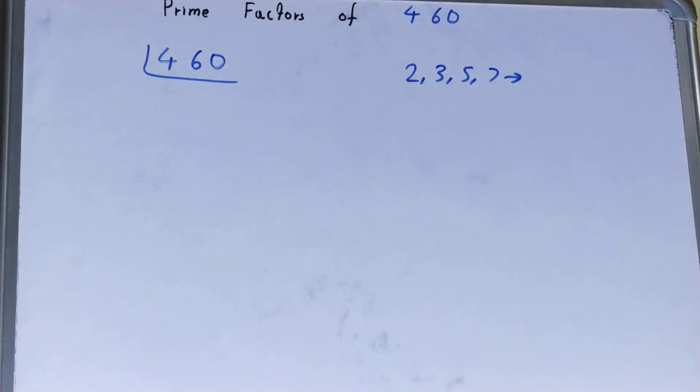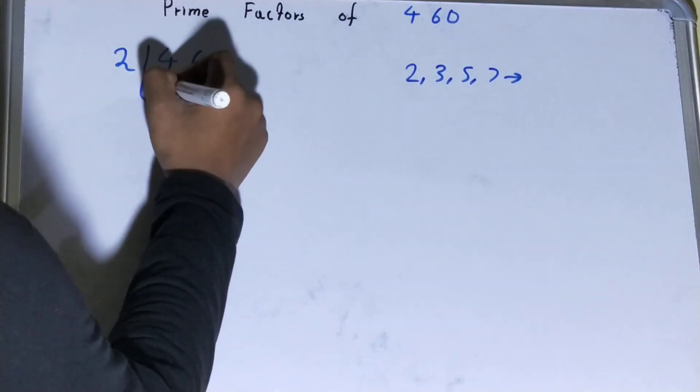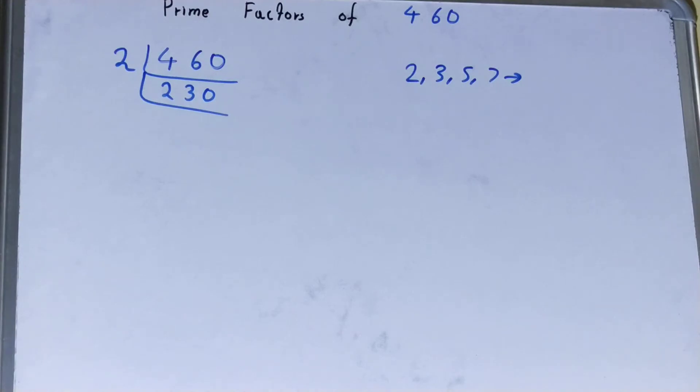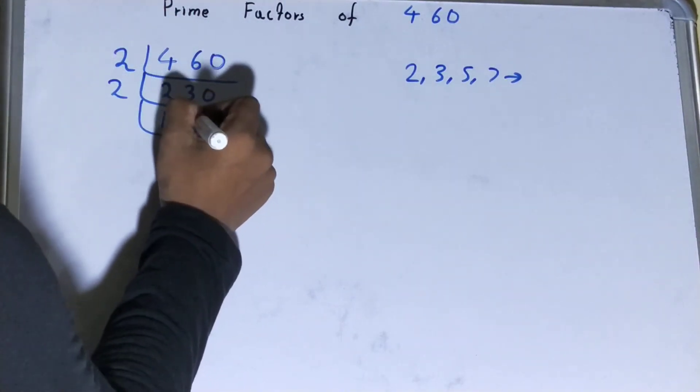So what we'll do, we'll start with the lowest prime number we have that is 2. Is the number 460 divisible by 2? The answer is yes because it is an even number so divide it and you will be left with 230. Is this 230 divisible by 2? Yes, it is divisible so divide it and you will be left with 115.